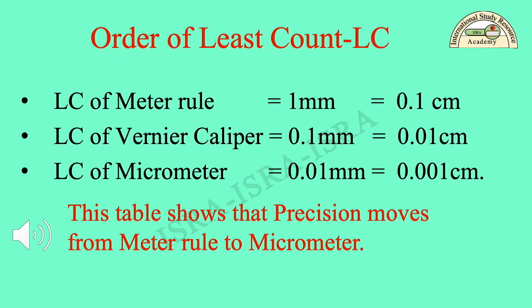Order of least count LC: least count of a meter rule is equal to 1 mm or 0.1 cm. Least count of a Vernier caliper is equal to 0.1 mm or 0.01 cm. Least count of a micrometer is equal to 0.01 mm or 0.001 cm. This shows that precision moves from the meter rule to the micrometer.